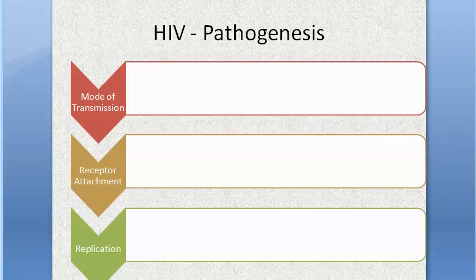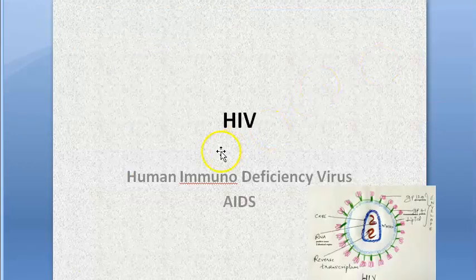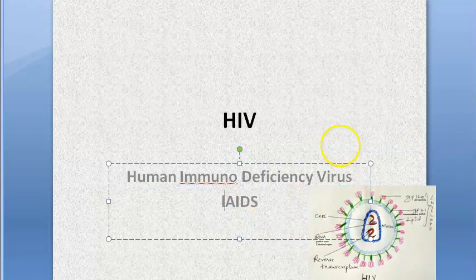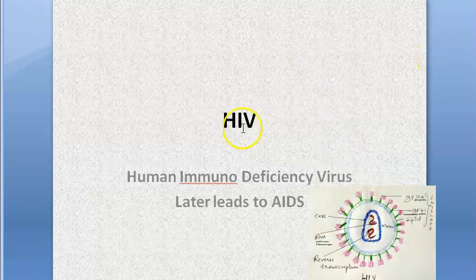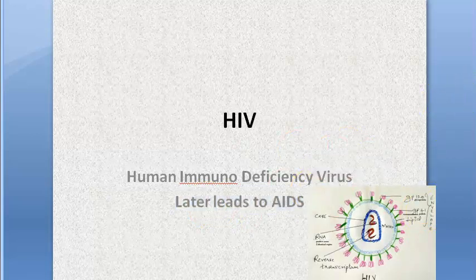In this video we look at the pathogenesis of HIV, the human immunodeficiency virus. As a recap: HIV infection later leads to AIDS. HIV infection is not called AIDS — a person is HIV positive, and only if it progresses does it become acquired immunodeficiency syndrome.